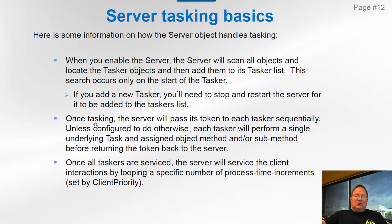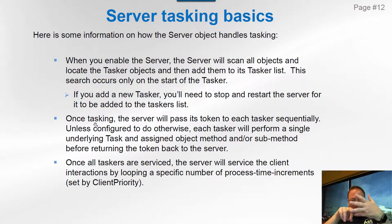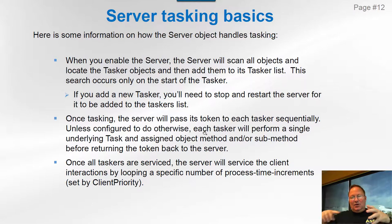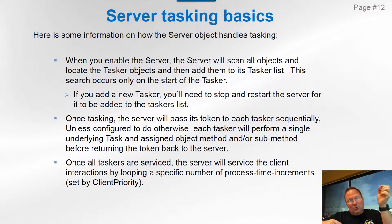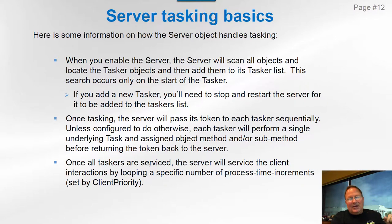Once tasking, the server passes the token to each tasker sequentially. It'll assemble that list and pass the token to this tasker, then this one, then this one sequentially. Those taskers will only do one underlying task all the way down to a sub-method, then pass it all the way back — unless you've configured the task object to do more, or if the tasker has a guaranteed time slice. Once all taskers are serviced with token passing, it goes into a quick loop servicing clients, then continues back to the taskers. You can change how it services those clients using the client priority.